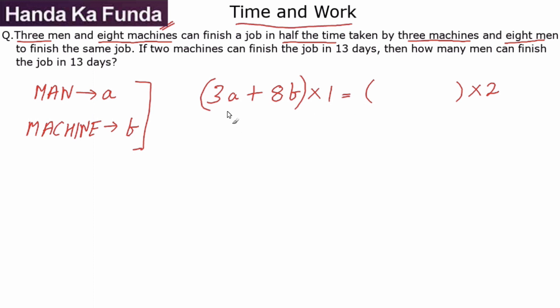Then the other part, whatever it is, can finish the job in two days because we are given that three men and eight machines take half the time. What is the other part? The other part has three machines, so that is 3b, and it has eight men. Men do 'a' units of work in a day, so this is 8a.